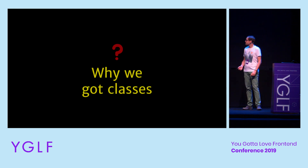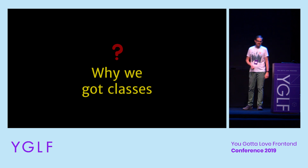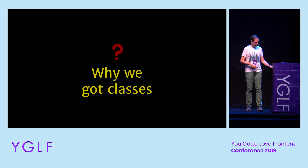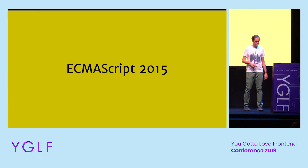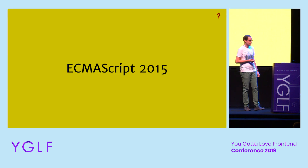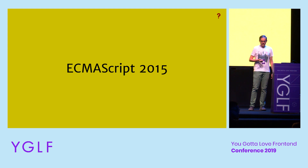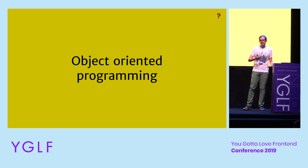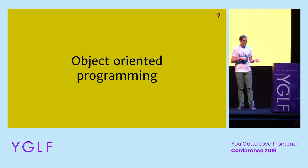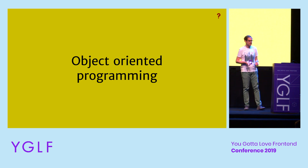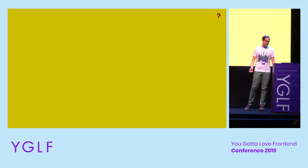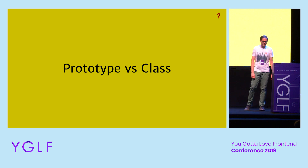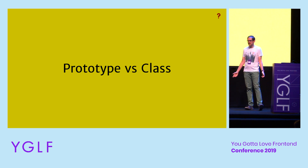So why did we get classes in the first place? Classes were introduced to JavaScript almost four years ago — 2015, around September when the standard was published. When you think of classes, you tend to think of object orientation. But JavaScript, right from the very beginning, already had a mechanism for object orientation, which is the prototype. So then why did we get classes again?